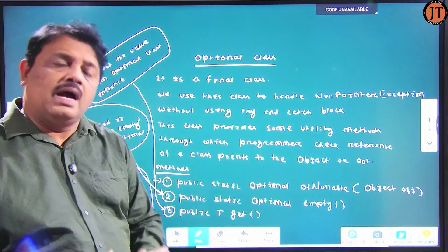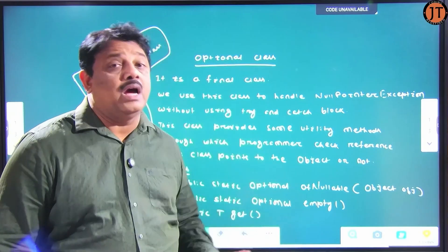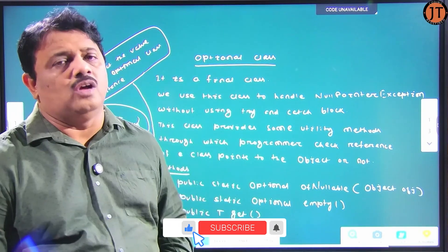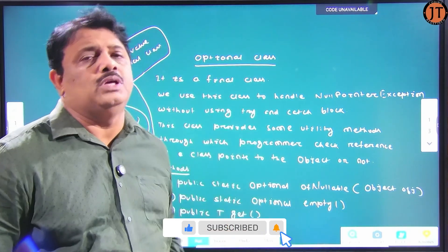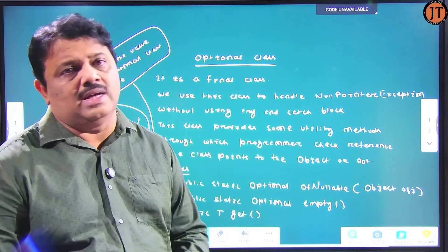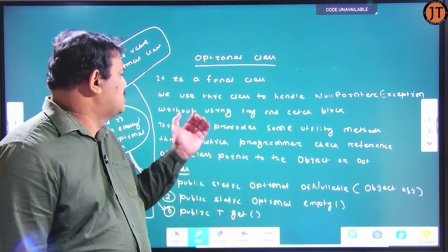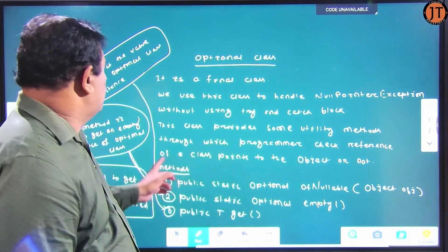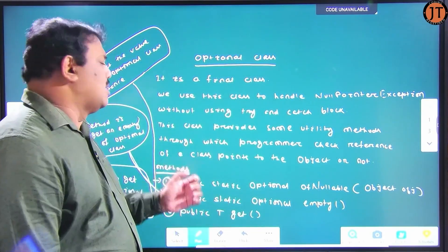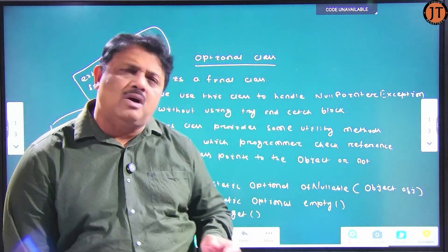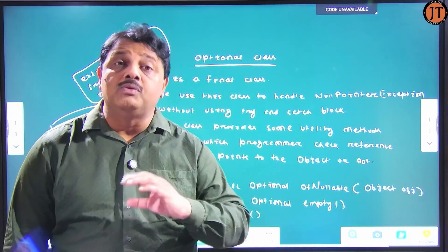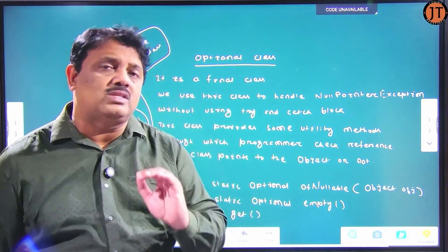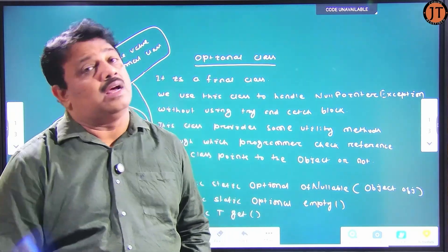As a programmer, if we don't want to use try-and-catch block to handle NullPointerException, we have to use the Optional class. This class provides some utility methods through which the programmer can check whether the reference of the class points to the object or not.